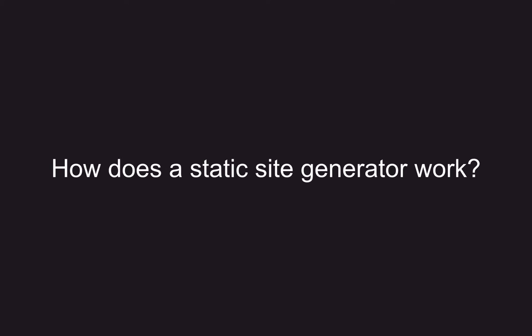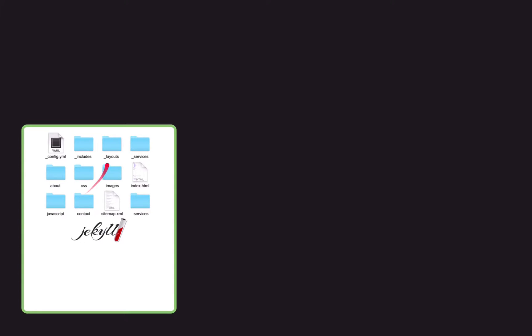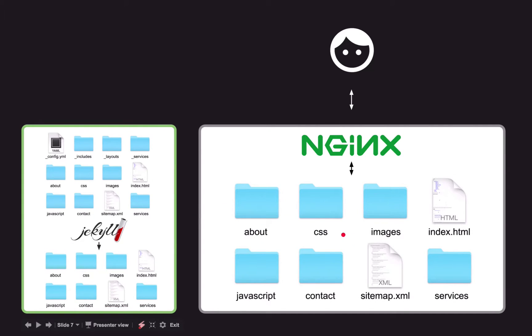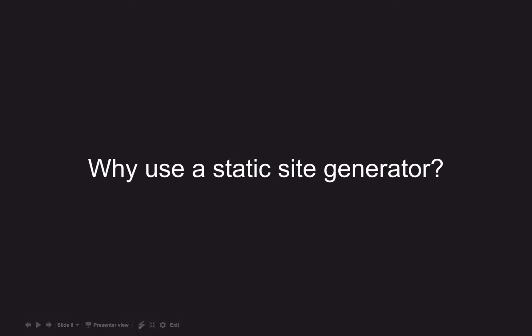So how does a static site generator work? First we run Jekyll on our source directory, which gives us a static website. Then we have our web server with nginx set up, and we copy the static files across to it. When a user visits the website, the request goes to nginx, which just looks for the file that's been requested, and if it exists, returns it to the user.